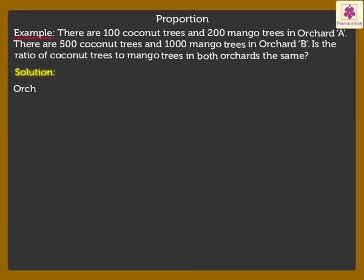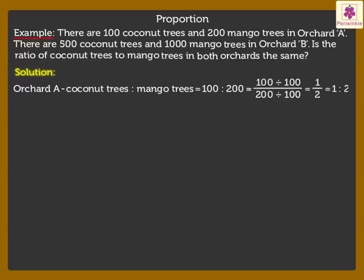In Orchard A, the ratio of the coconut trees to mango trees is 100 is to 200 which is equal to 1 is to 2.